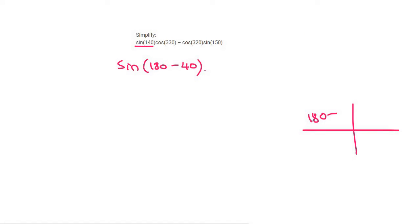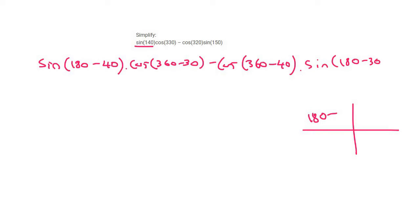Cos 330, well that's in the fourth quadrant, so we'll say 360 minus 30, minus cos 360 minus 40. And then multiplied by sin 180 minus 30.